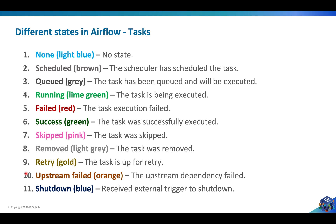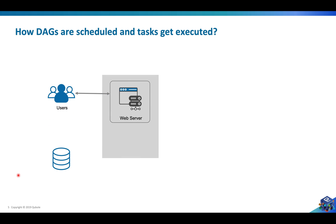Now let's talk about different states of task instances. There are 11 states for task instances. You can pause this video and read through what the different states mean. In your day-to-day usage of Apache Airflow you'll mostly come across the top six states only. The other five are conditional and you'll only encounter them if you have any specific condition mentioned in your DAG. So pause the video and read through all of these states.